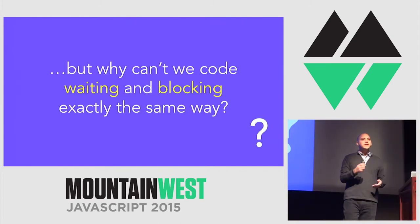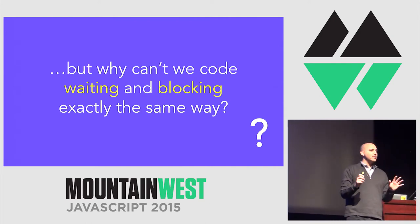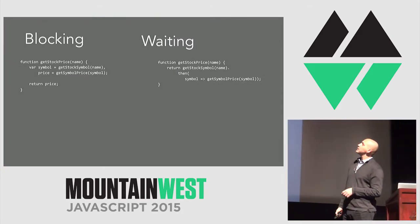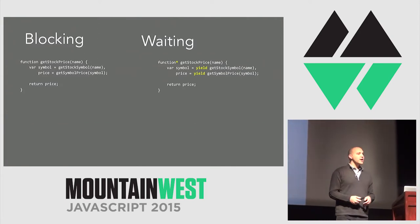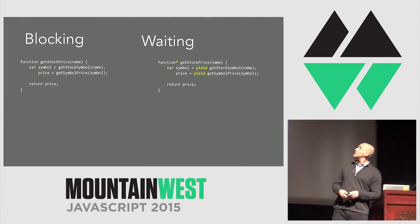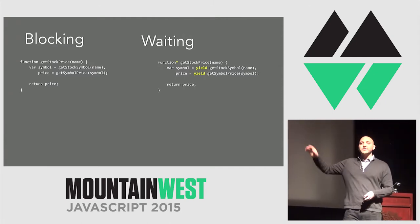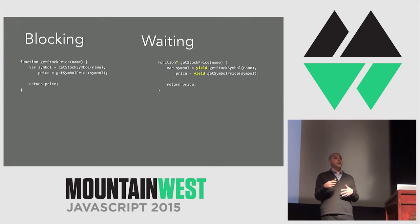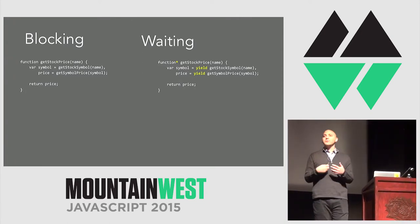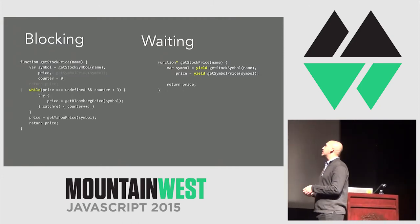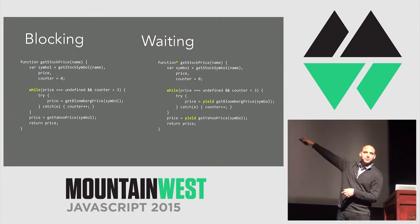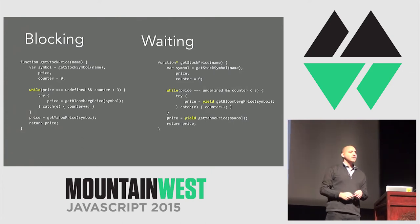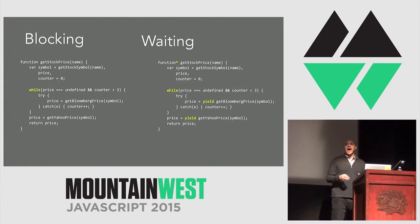But it still looks awfully different. What if we could code waiting and blocking exactly the same way — what if the code looked almost exactly the same? In ES2015, you can make waiting look almost exactly like blocking, and it'll work with try-catch and native control flow structures like while loops. Imagine repeating an asynchronous operation with a while loop — trying to get the stock price from Bloomberg three times, then falling back to Yahoo. A loop repeating an asynchronous operation.